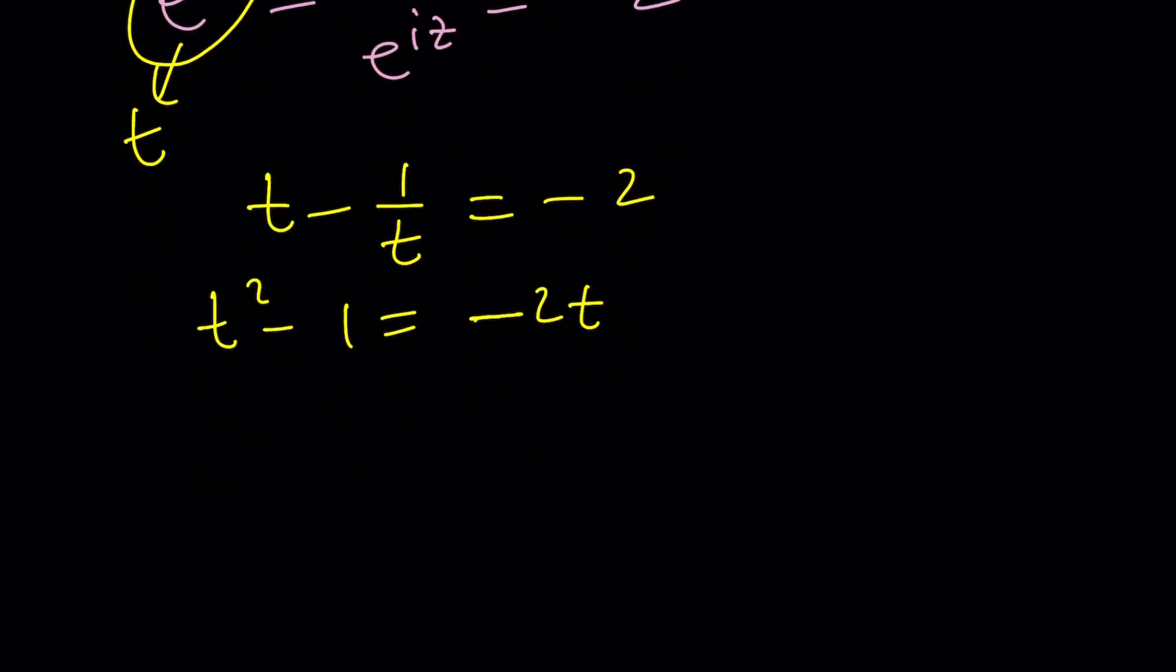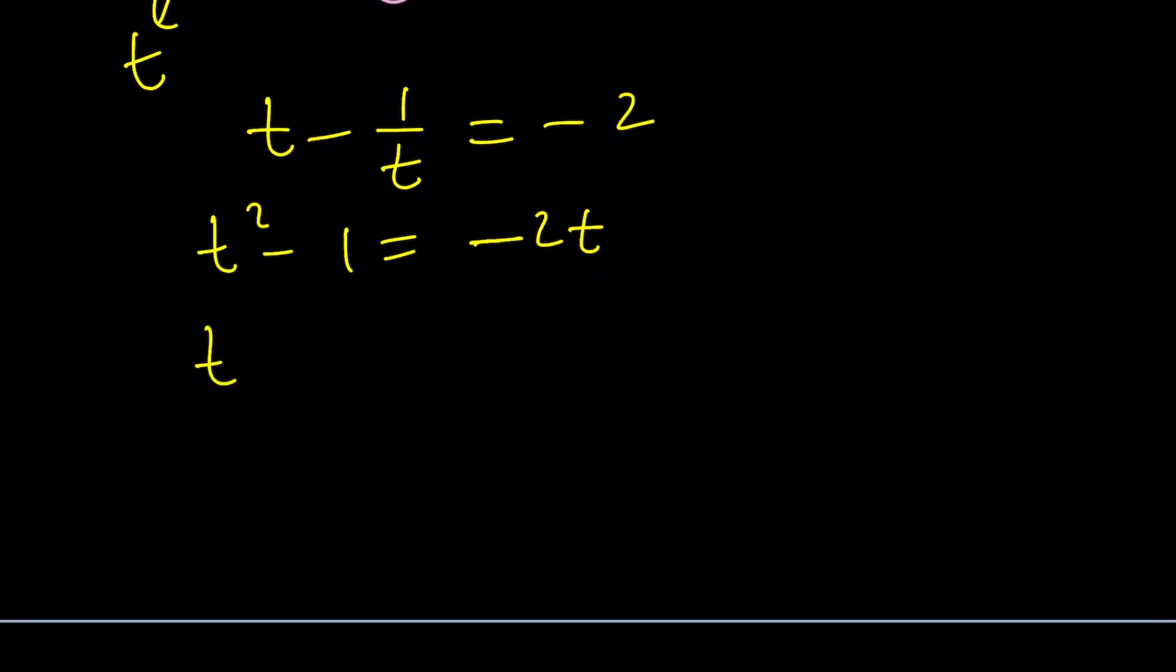If you see something being repeated, use substitution because substitution is awesome. Call this t. And then you get t minus 1 over t equals negative 2. And then we're going to multiply everything by t. t squared minus 1 equals negative 2t. Put everything on the same side. And don't get too excited. This is not a perfect square.